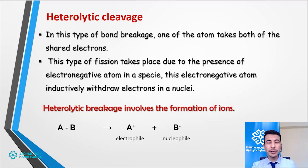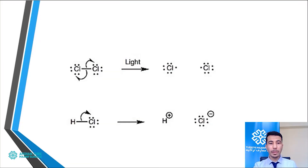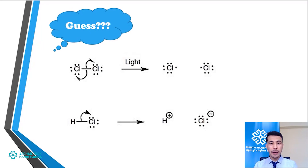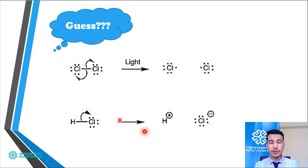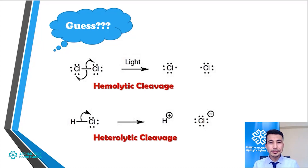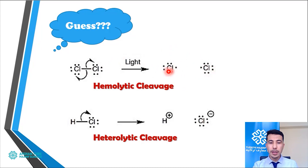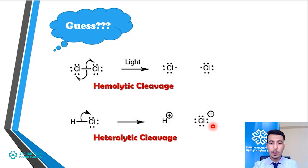Now let's look at an example. Pause the video and guess: which one is hemolytic breakage and which one is heterolytic breakage? The answer: the first one — Cl₂ — is hemolytic breakage, because when the chlorine-chlorine bond breaks, each chlorine atom takes its own share of one electron. In the second one — HCl (hydrogen chloride) — chlorine takes both of the shared electrons. Hydrogen is left with an empty orbital and is a positive ion, while chlorine has one extra electron and is a negative ion. This is heterolytic breakage.